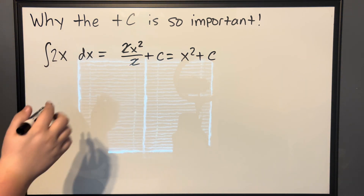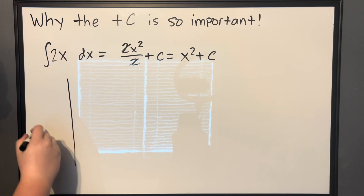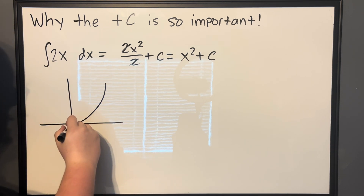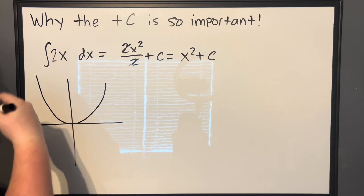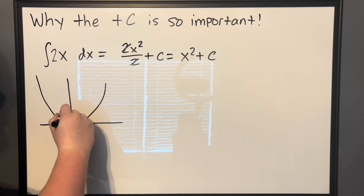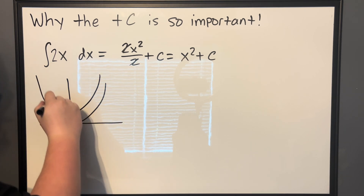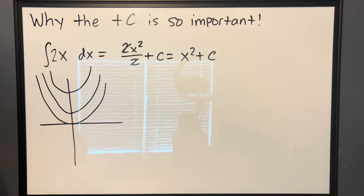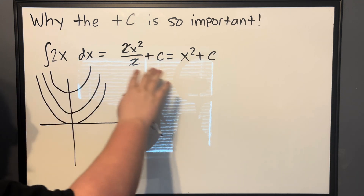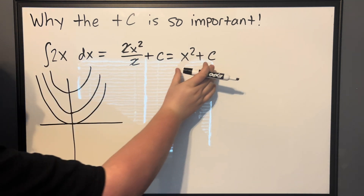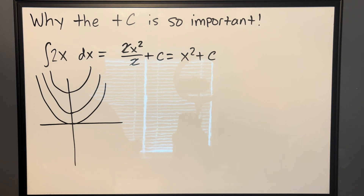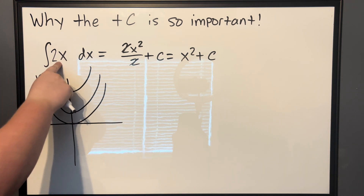That plus C is just an arbitrary constant. So if we were going to graph this function, here's x squared where C is 0. If we were to shift it up a unit, it would look something like this, and shift it up three units, it would look like this. You can shift this function as much as you want. The reason this doesn't affect the answer is because if we were to take the derivative of this, no matter what constant we choose, we're going to get back to 2x.